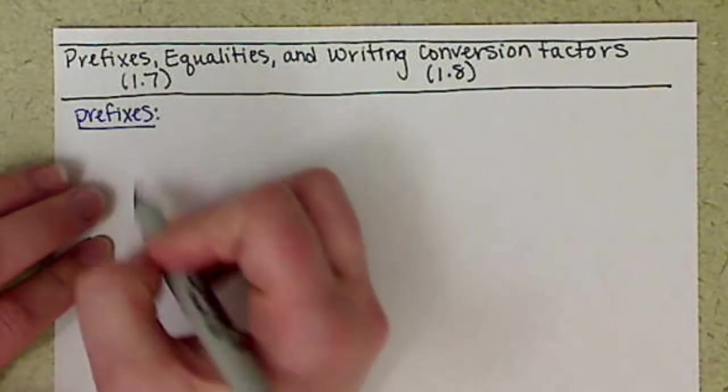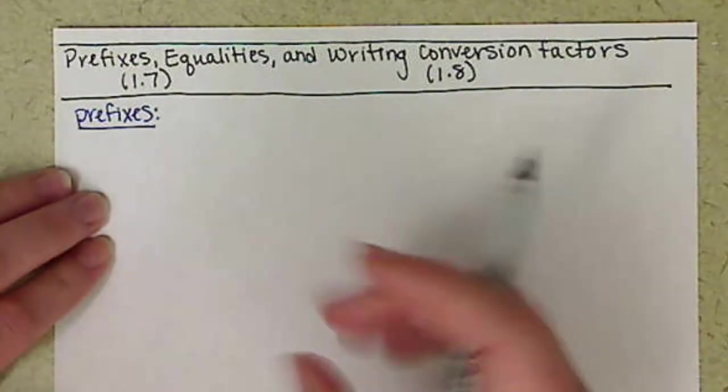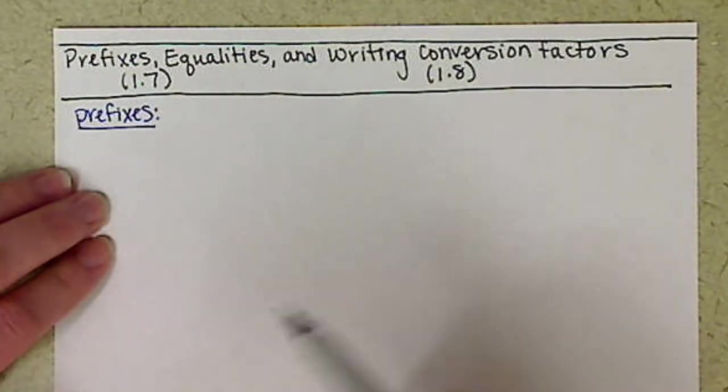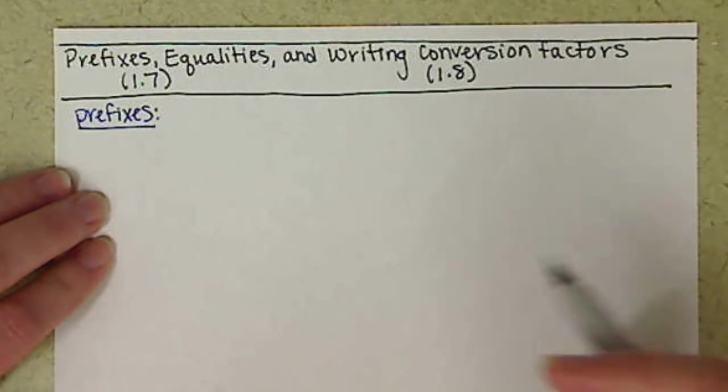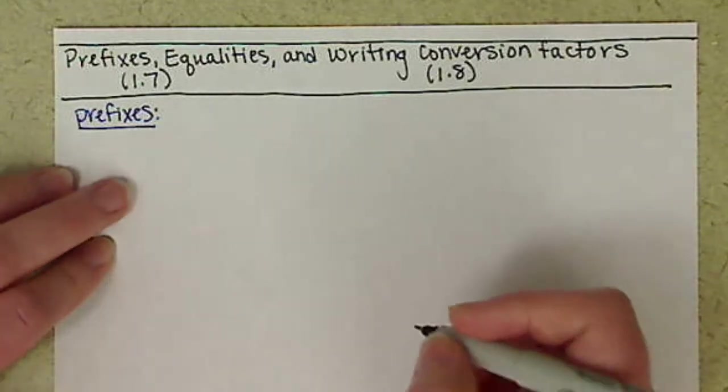So our prefixes in the metric system. These are letters, they're symbols that are added to our base units in order to either increase or decrease by some sort of factor of 10.